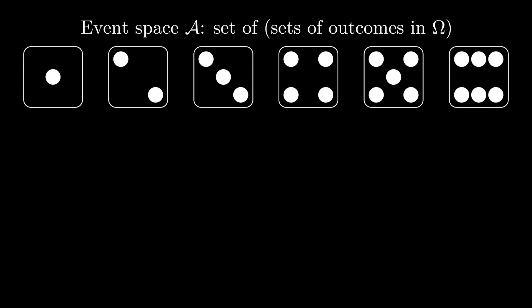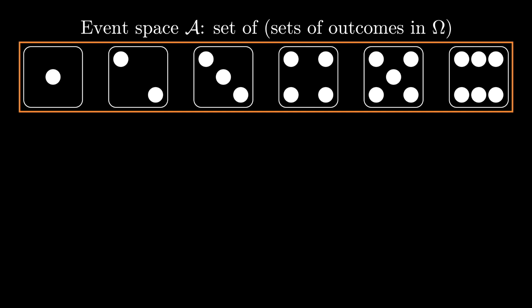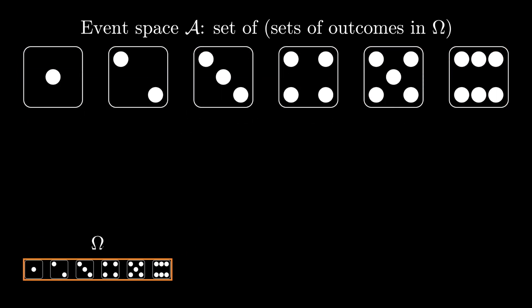Let's look at a simple example with a finite sample space consisting of the six outcomes of a six-sided die. To start building our event space A, we must of course include all of omega, and we have to include the empty set. Now, let's imagine that we want to include another subset, here the outcomes 1, 2, and 3, denoted alpha.